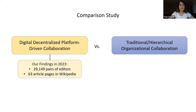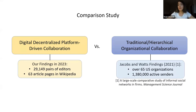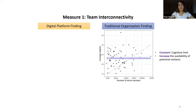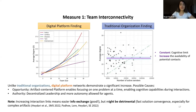We compare our Wikipedia findings against Jacob and Watts' study published in Management Science, which examined over 65 US organizational networks as representative of traditional organizational collaboration. For team interconnectivity, in the Jacob and Watts study, average degree stays constant as the network grows — attributed to cognitive limits. But in Wikipedia, interestingly, interconnectivity actually grows as the network grows in size across all our domains. Two possible causes: artifact-centered platforms enable focusing on one problem at a time, enhancing cognitive capabilities during interactions, and the authority of agents enabled by decentralized leadership.